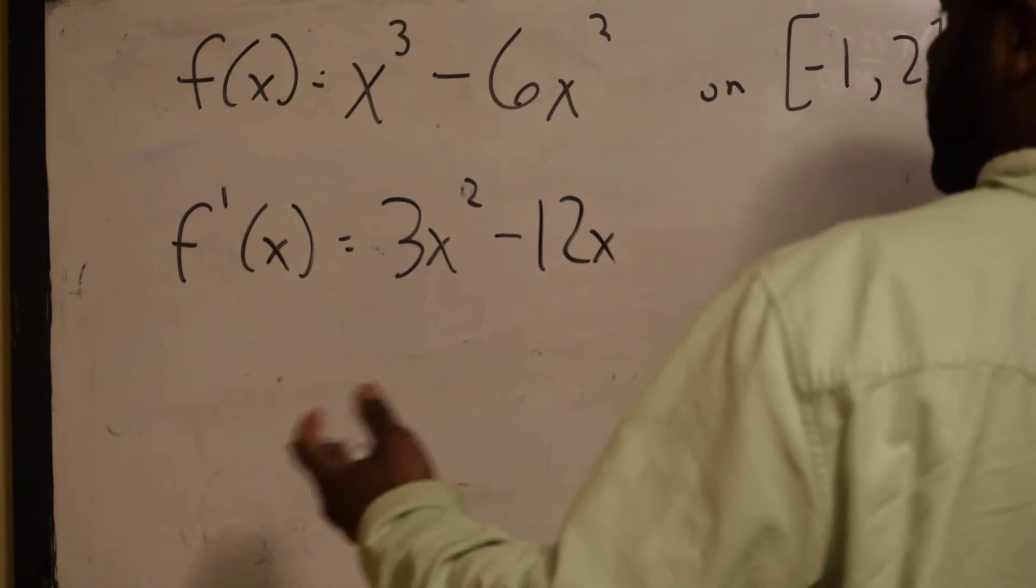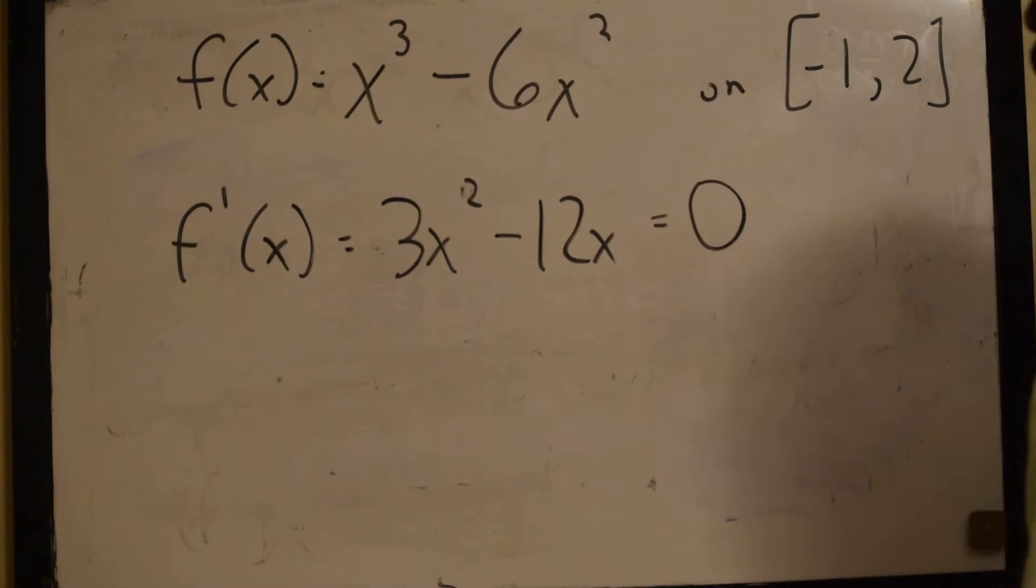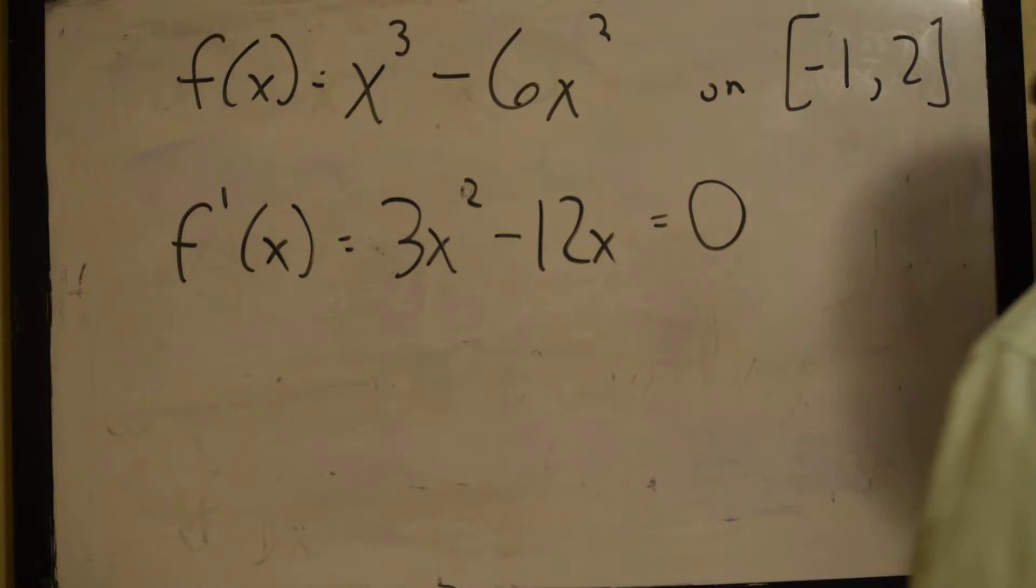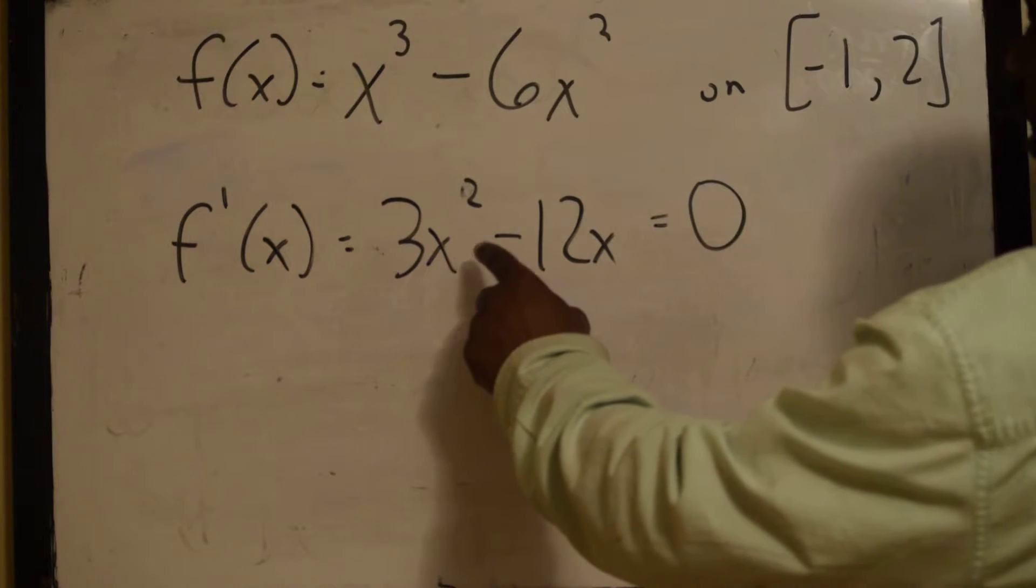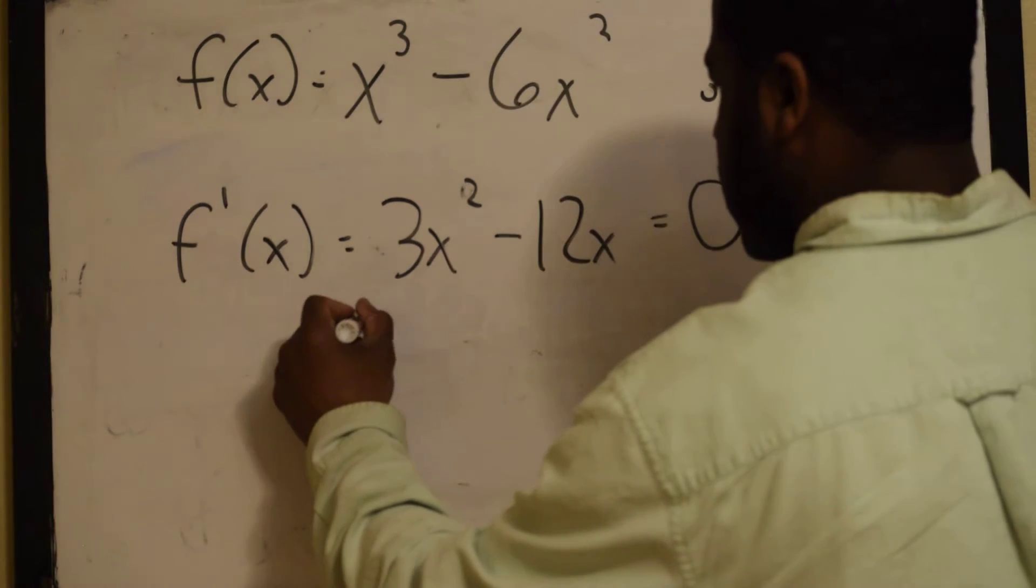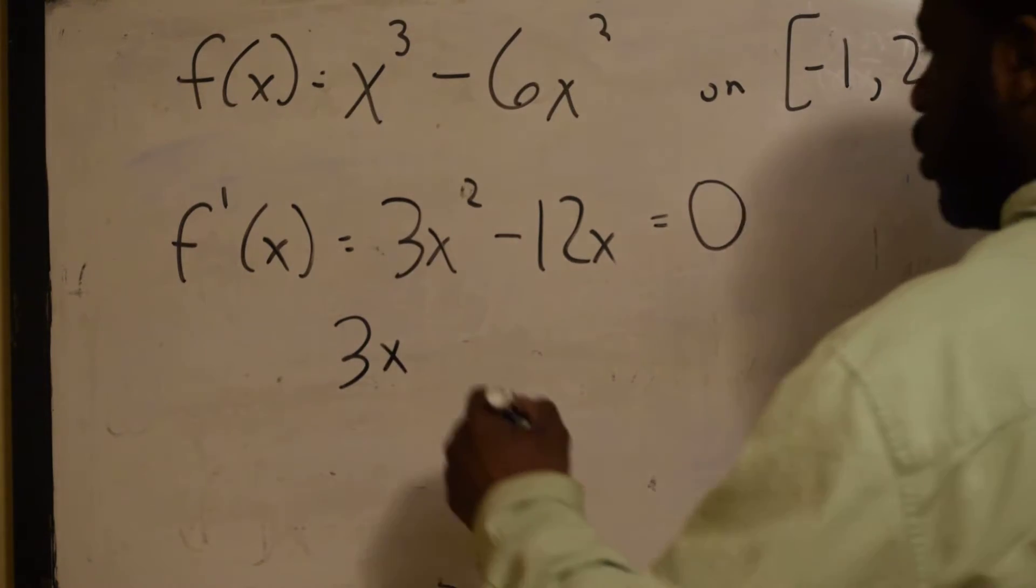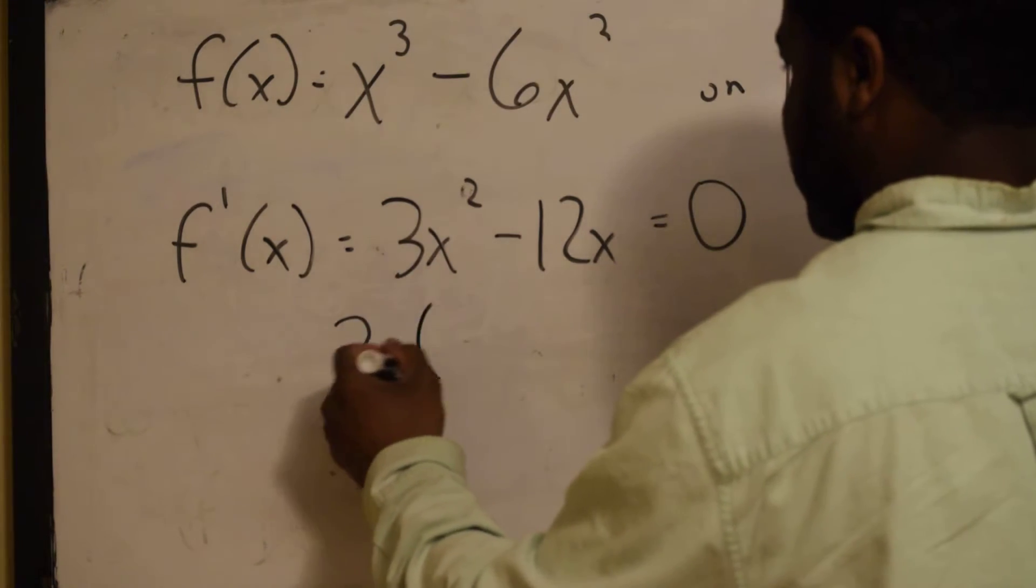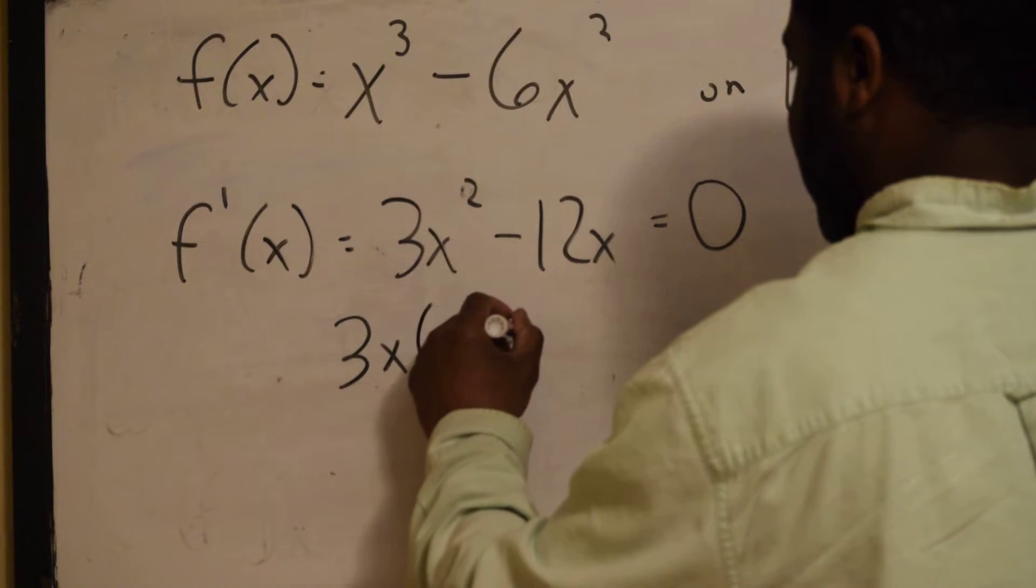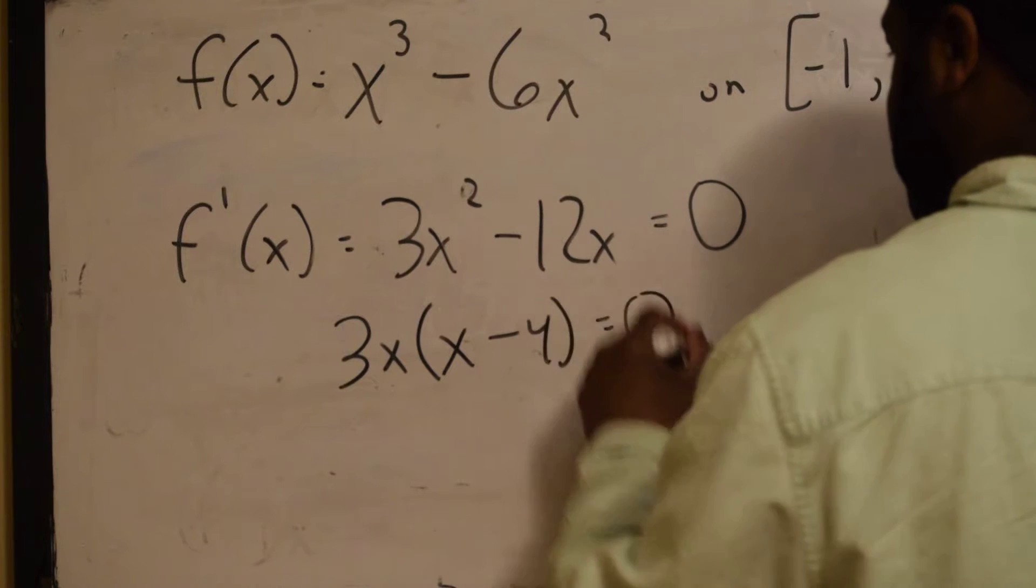Okay, to save time, I'm going to do it. We set this equal to 0. Alright, 3x squared minus 12x, which is equal to 0. Now, what does 3x squared and 12x have in common? We factor out the greatest common factor, which is 3x. That's 3x and then x minus 4, which is equal to 0.